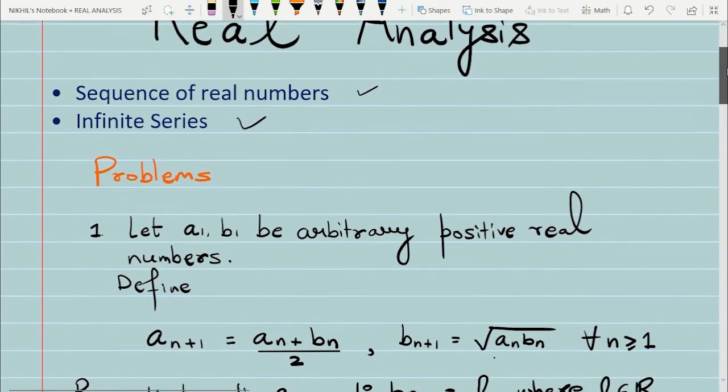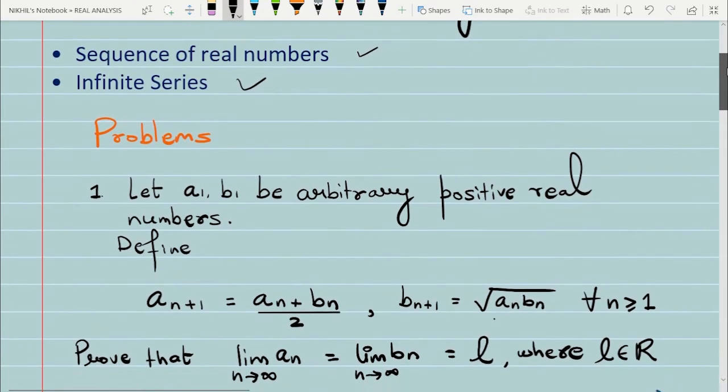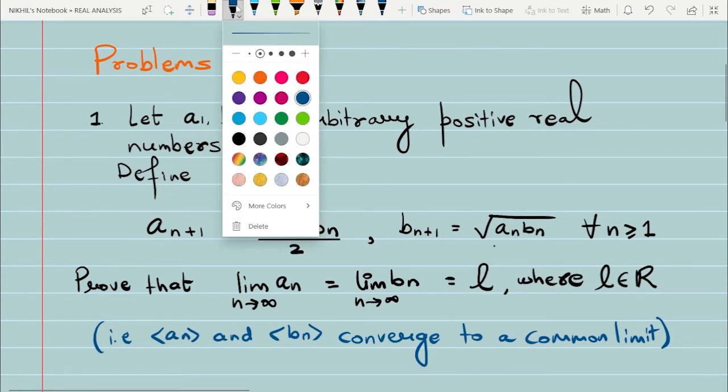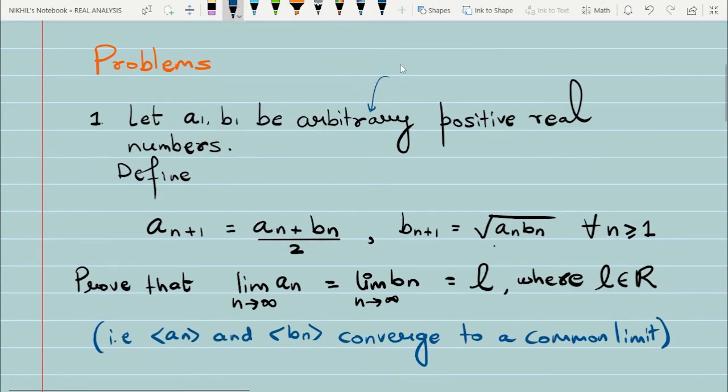Let's see the first problem. What it says is let A1 and B1 be two arbitrary positive real numbers. Arbitrary means that they can be any, not fixed something. They are positive, of course, that is greater than zero.